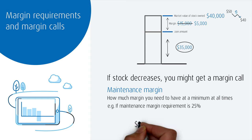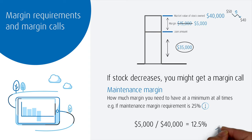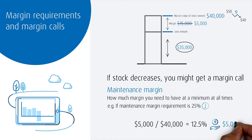$5,000 divided by $40,000 equals 12.5%. Because this is below the maintenance margin requirement of 25% in this case, you would be asked to either deposit another $5,000 to bring up the margin to 25% or sell some shares.